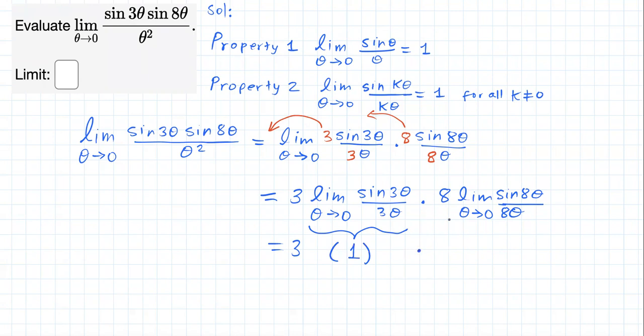Times eight, multiply by the limit of sine of eight theta divided by eight theta as theta approaches zero. For k equals eight, applying property two, this should be just equal to one.